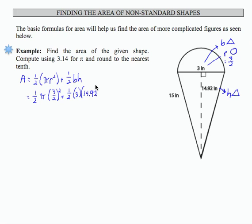And the units on this are going to be inches squared. I'm going to hold off and add those in at the end. So if I begin to work with my fractions here, I've got pi over 2 times 3 halves times 3 halves is 9 over 4, plus 1 half times 3 is 3 halves times 14.92.